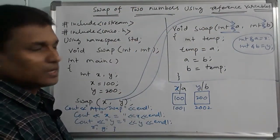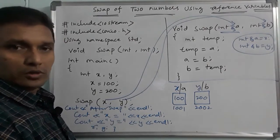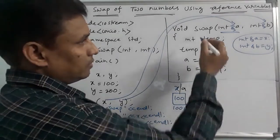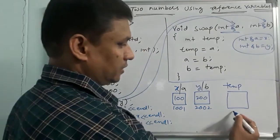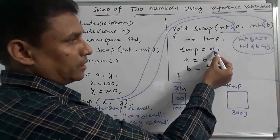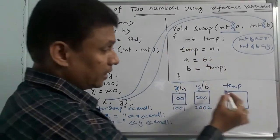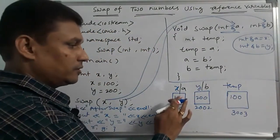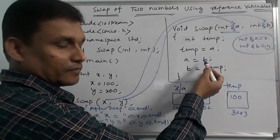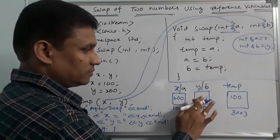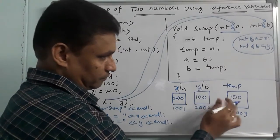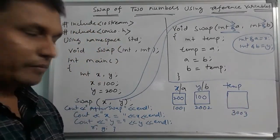So, with swap using reference variables: a temporary variable temp is created. Temp equals a — so a is stored in temp. Then a equals b. B is now moved to a. Then b equals temp — temp holds 100, so 100 goes into b. So interchange is complete. A value and x value are the same; y value and b value are the same.